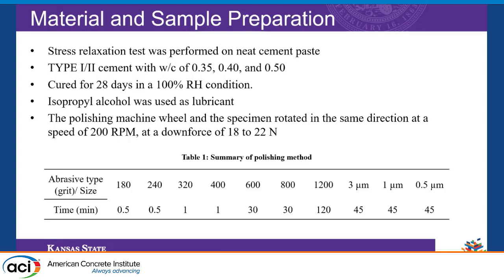Knowing that the relaxation behavior originates from the calcium silicate hydrate in the cement paste, the present study is focused on neat cement paste. We are using water-cement ratios of 0.35, 0.4, and 0.5. Isopropyl alcohol was used as a lubricant for the polishing process to avoid any further dissolution of hydration products such as calcium hydroxide. The sizes of polishing disc used and the time spent on each disc are shown in the table.